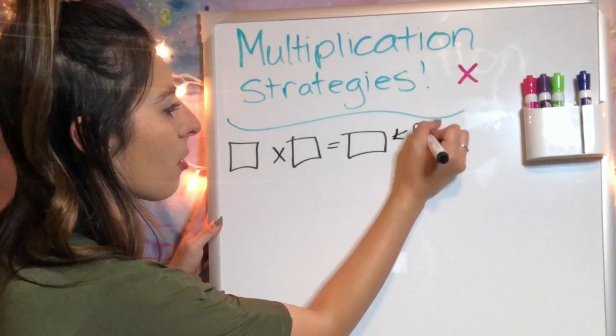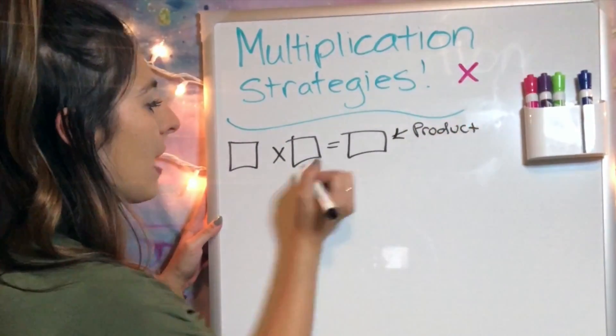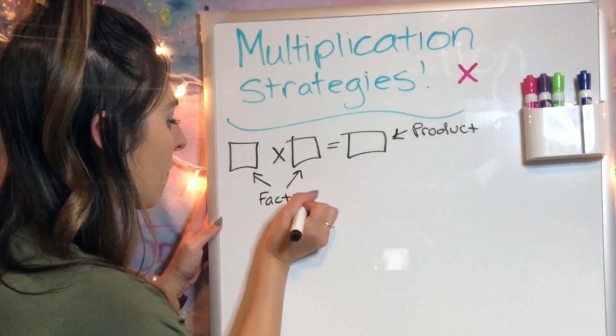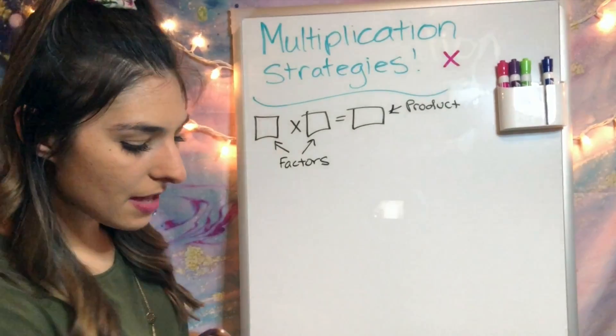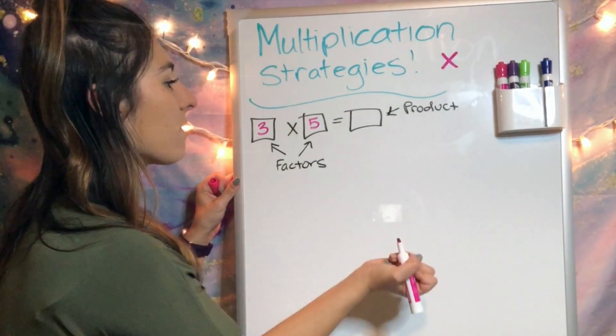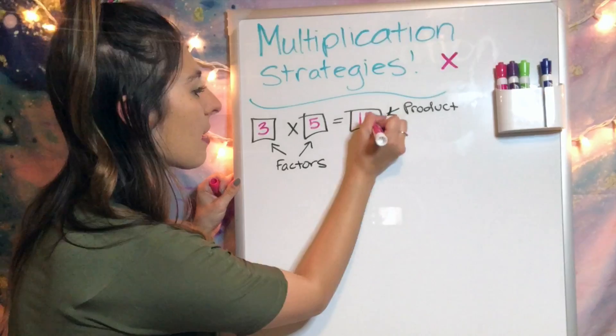This would be the product and these would be the factors. If we fill that in, let's say we have 3 times 5, the product is going to be 15.